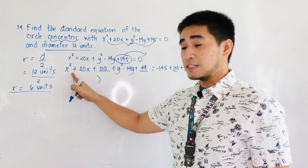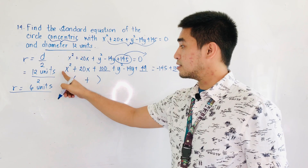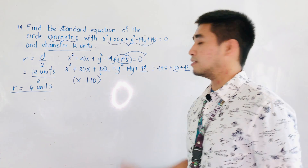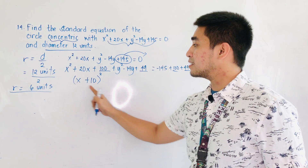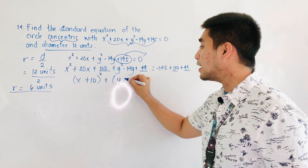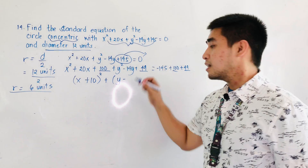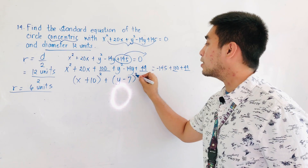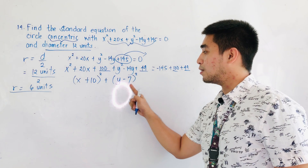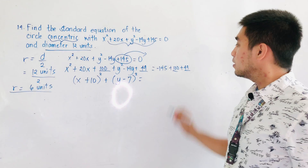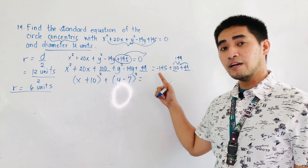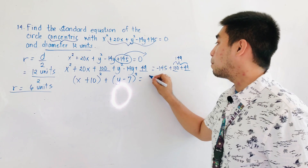Let us factor. The middle term is positive, therefore this should be positive. Square root of 100 is 10, so that is x plus 10, quantity squared — since 10 times 10 is 100 and 10x plus 10x is 20x. The middle term for y is negative, therefore this becomes y minus 7, quantity squared — since negative 7 times negative 7 is positive 49 and negative 7y plus negative 7y is negative 14y. This is equal to 100 plus 49 which is 149, minus 145, giving us positive 4.